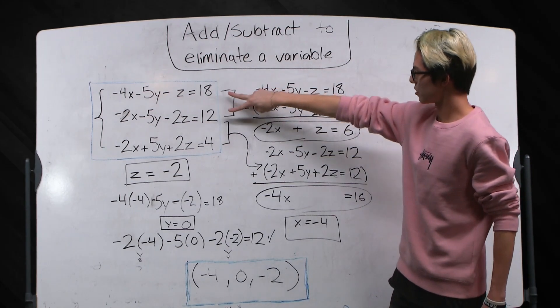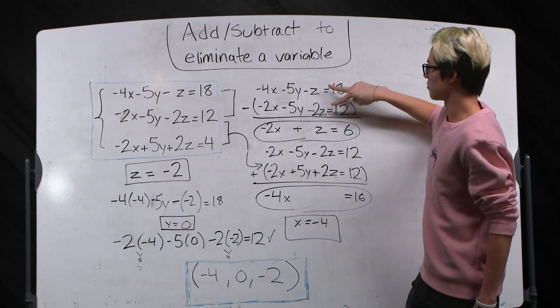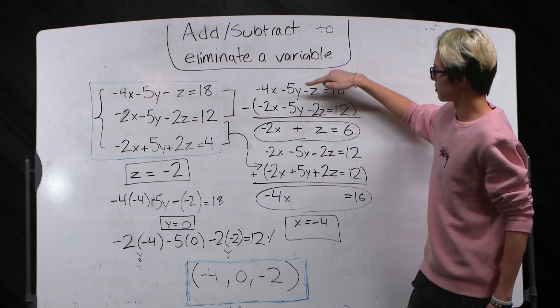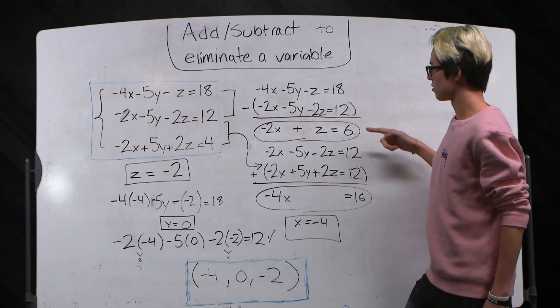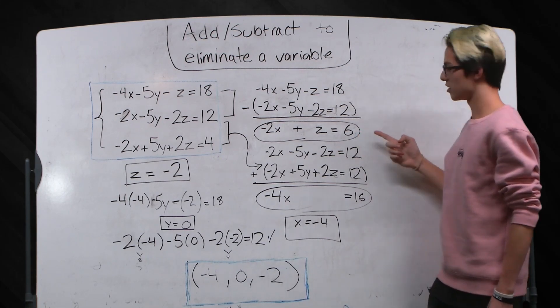So I'm going to take these two equations right here and I'm going to try to eliminate y by subtracting this equation from this equation and in doing so I get minus 2x plus z equals 6.